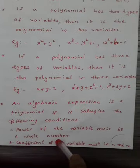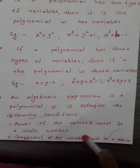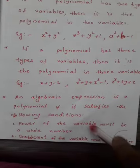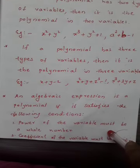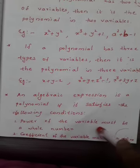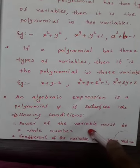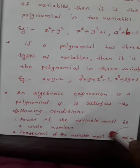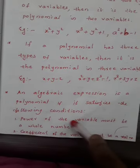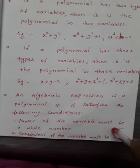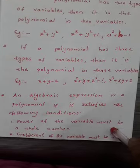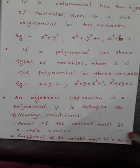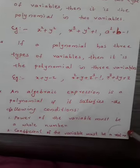The second condition is: the coefficient of the variable must be a real number. For example, the square root of a negative number or the cube root of a negative number are not real numbers. So the coefficient of the variable must be a real number.